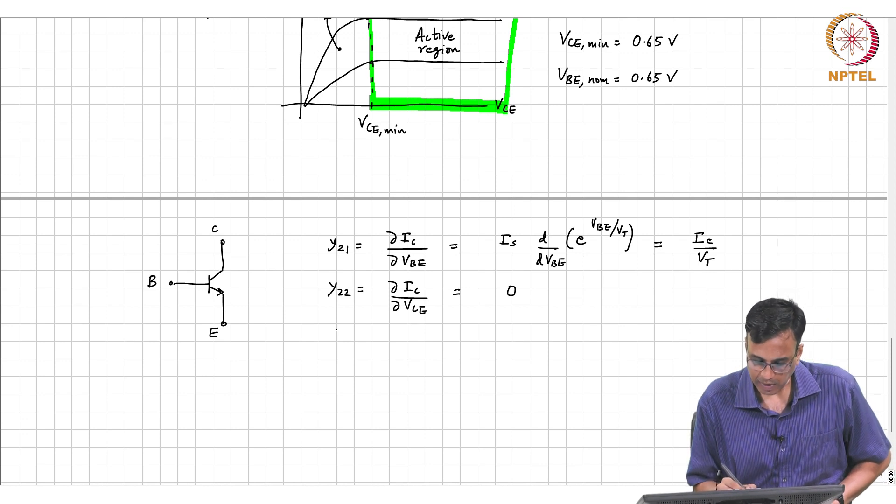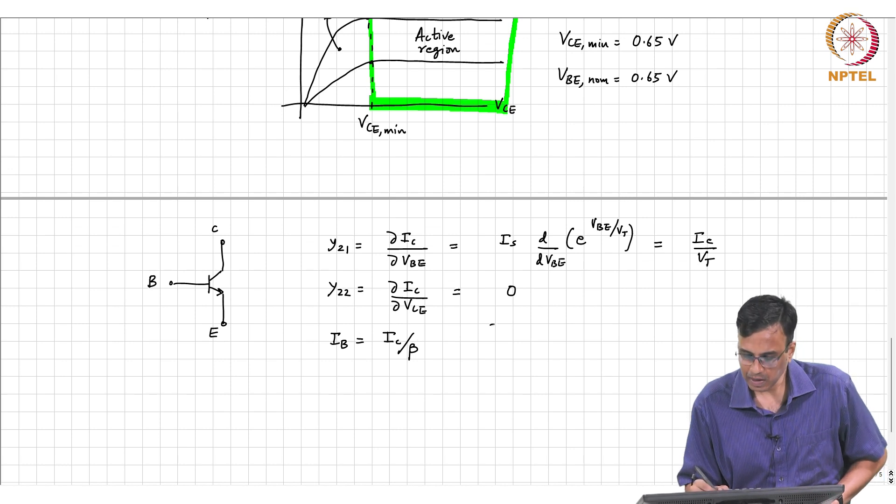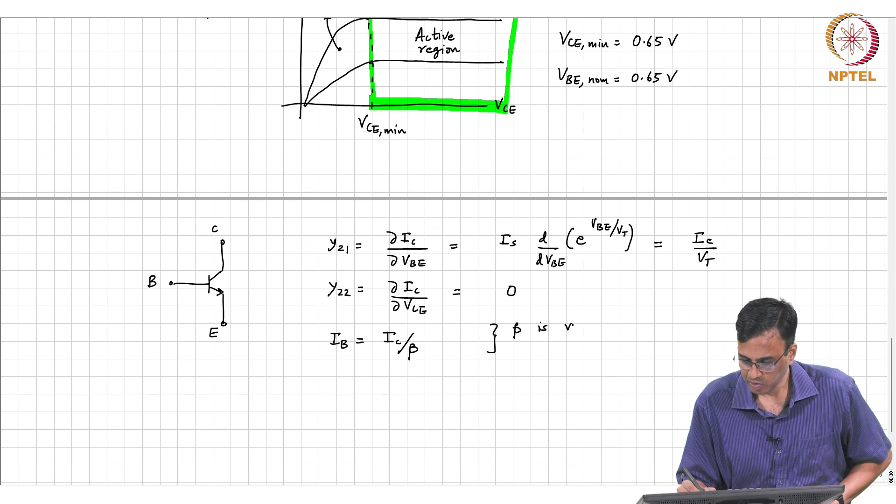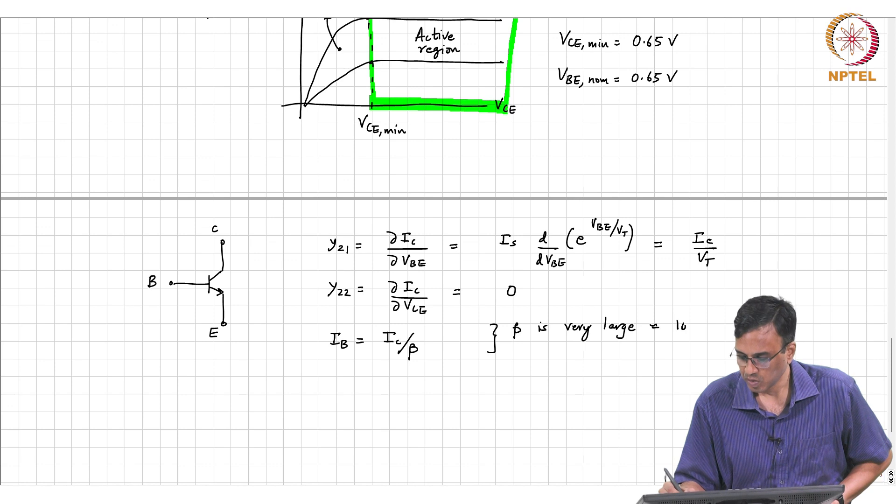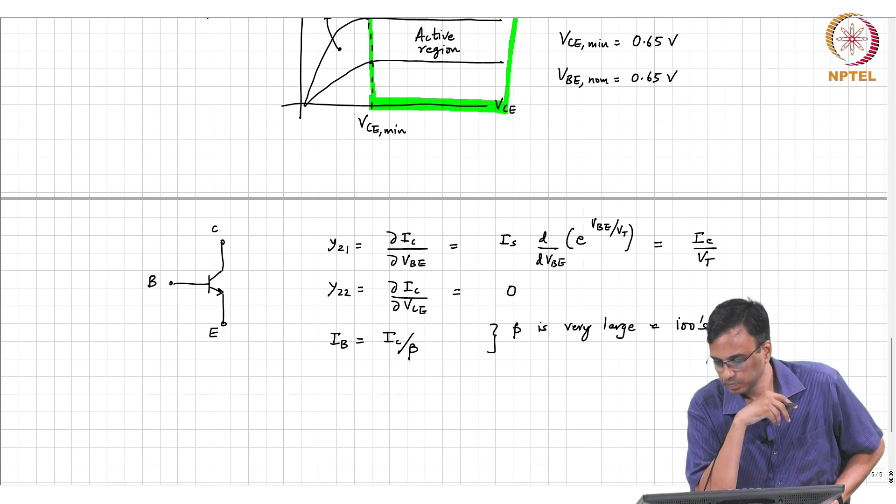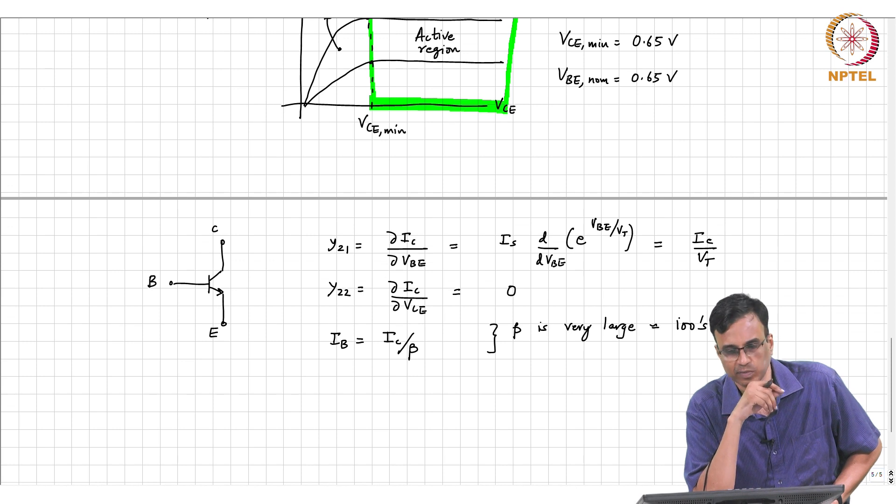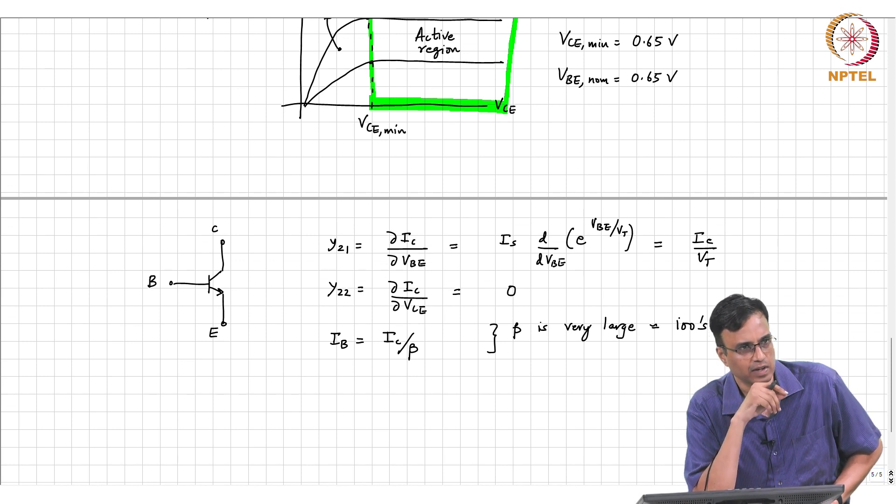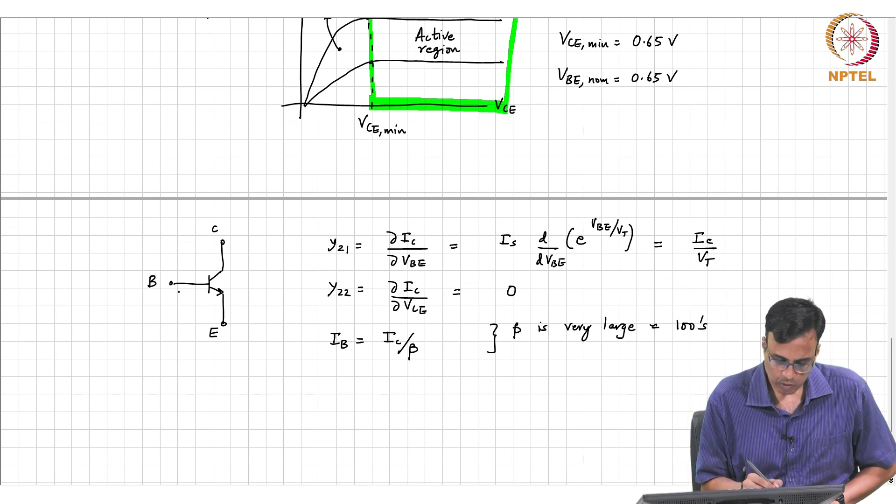Now, the base current is the collector current by beta. Typically beta is very large, a few hundred. Therefore, this base current is small; ideally it is supposed to be a very tiny fraction of the collector current.